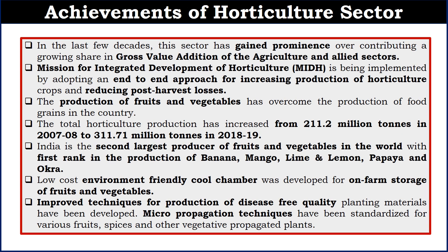Let's discuss some of the achievements of the horticulture sector. In the last few decades the horticulture sector has grown continuously, increasing its share of gross value addition in agriculture and allied sectors. Mission for Integrated Development of Horticulture is being implemented to increase production and take care of post-harvest losses. Production of fruits and vegetables has now overcome the production of food grains in the country. The total horticulture produce has increased by more than 100 million tons in the last 10-11 years, which is a very big achievement.